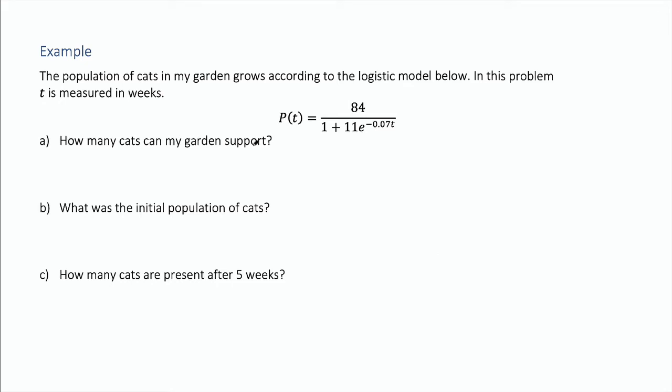So this is the limit to growth or carrying capacity and that is just the numerator of the logistic growth model and so 84 cats, that's how many cats can live in my garden which is apparently a very large and useful garden for the cats.